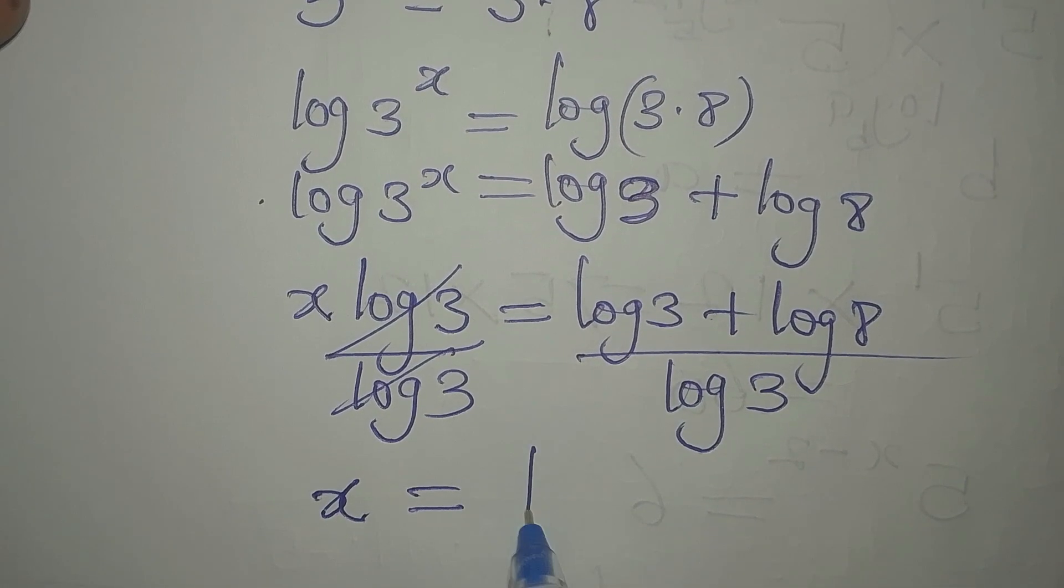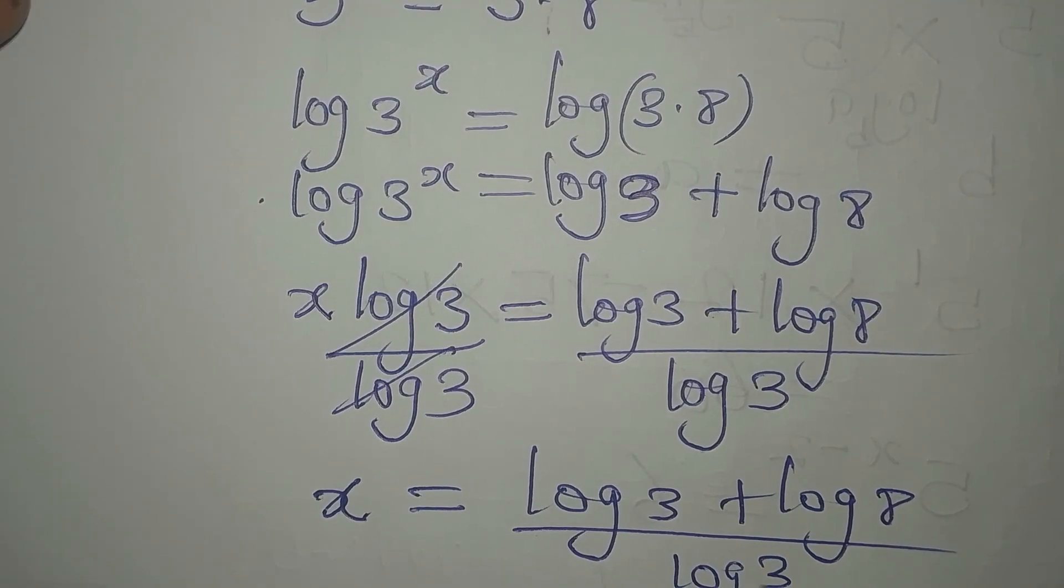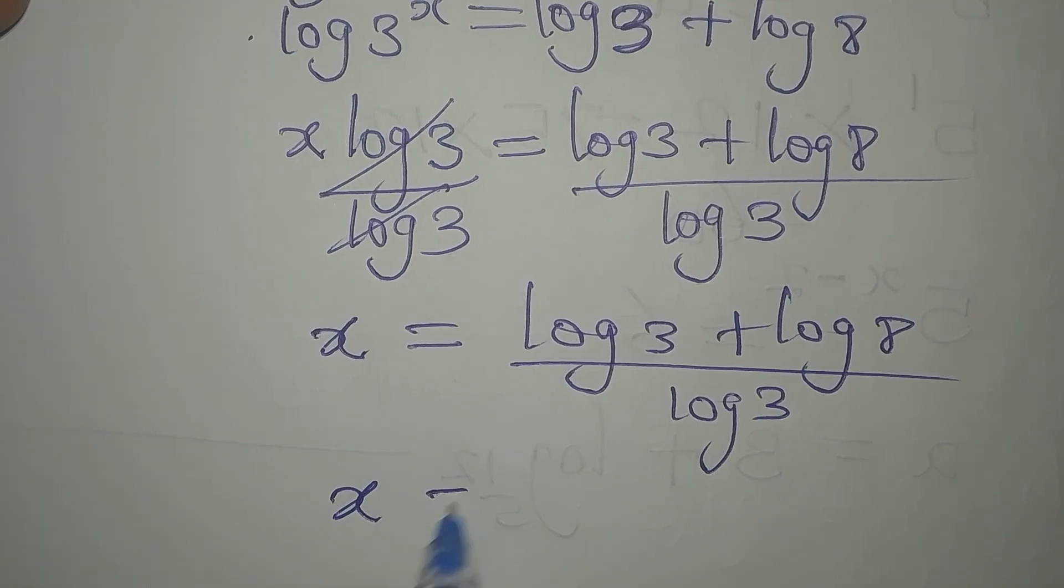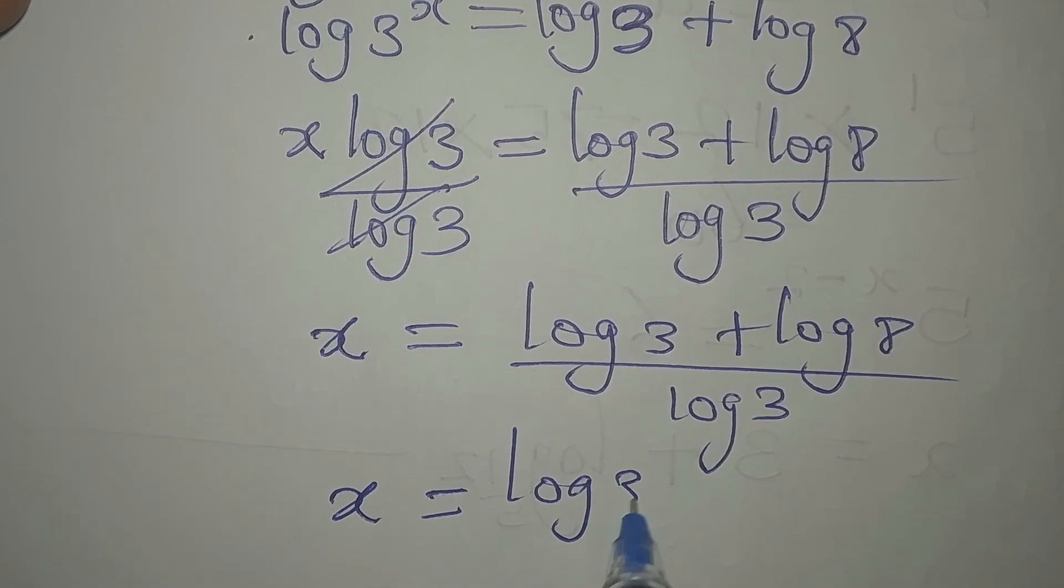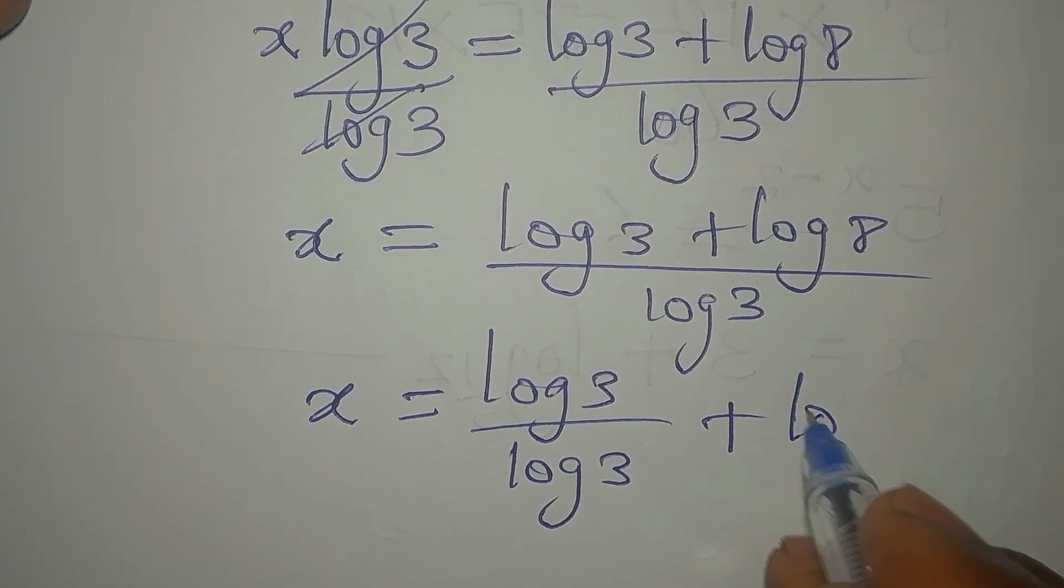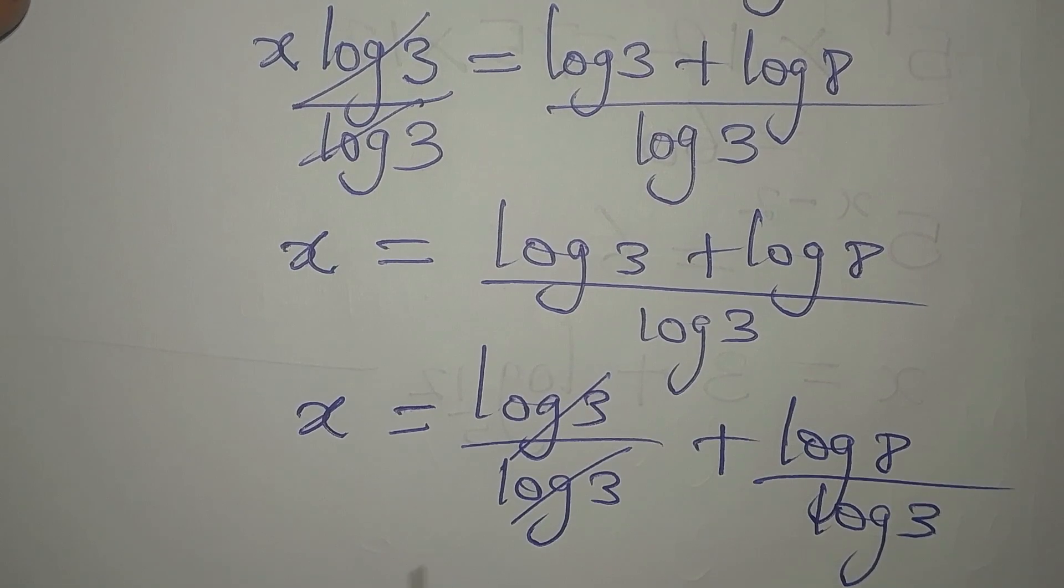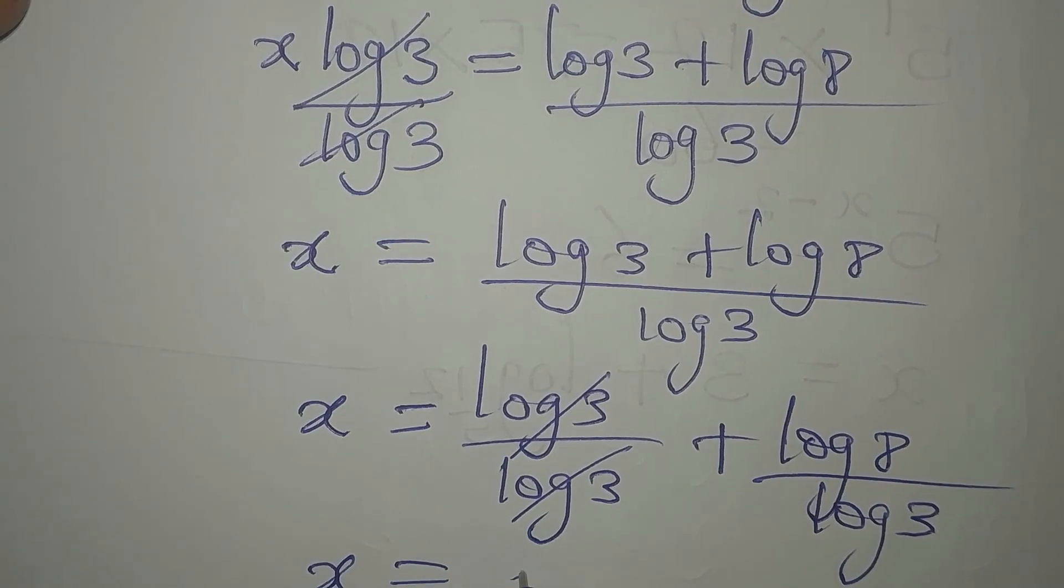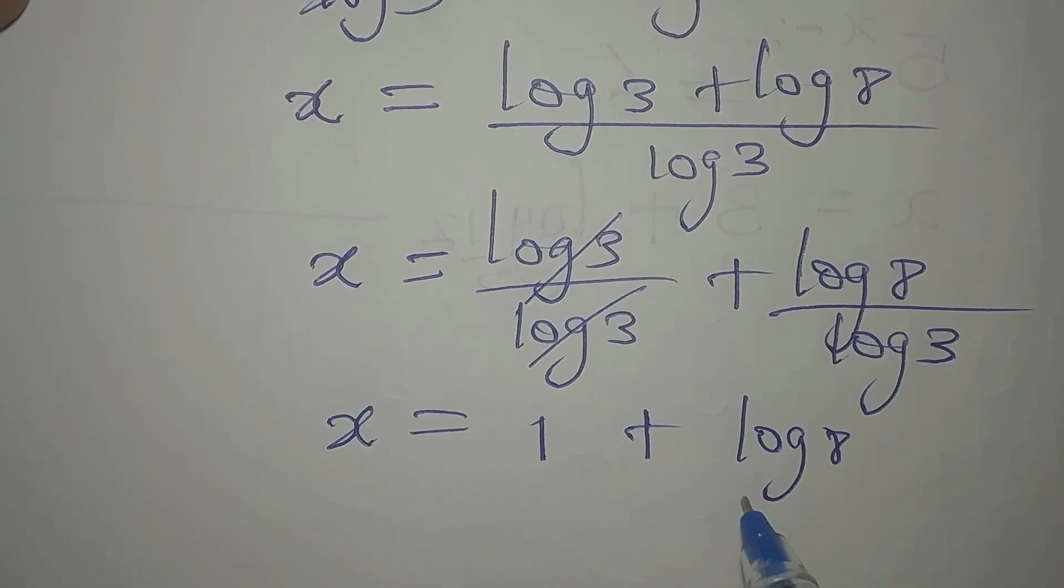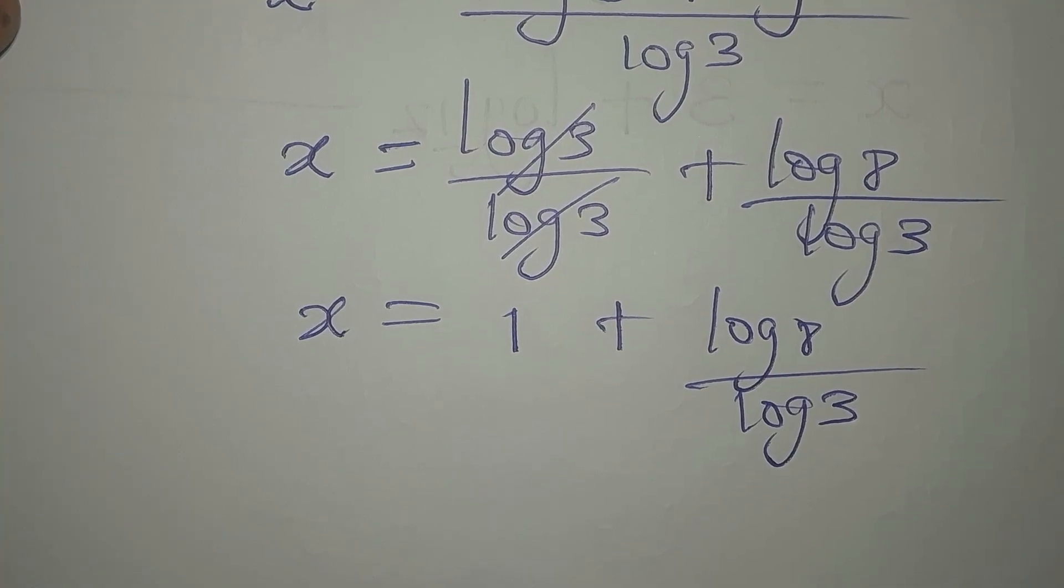So x will now be log 3 plus log 8 all over log 3. But mind you, this base is for both numerators, so we can decide to write x as log 3 over log 3 plus log 8 divided by log 3. This will go there, then x will be here, we'll have 1 plus log 8 divided by log 3.